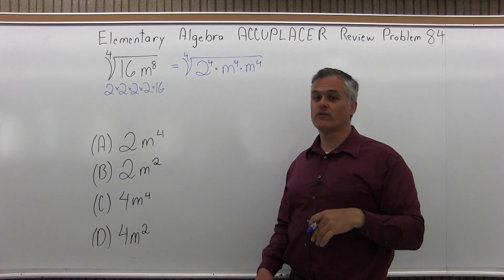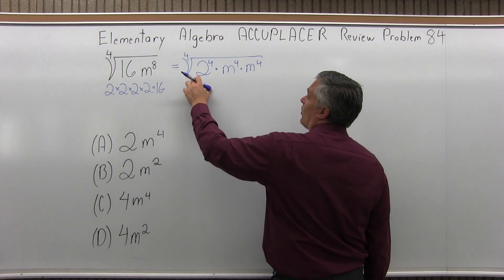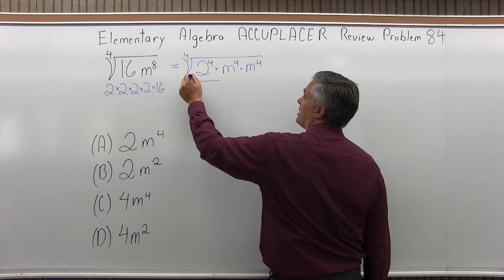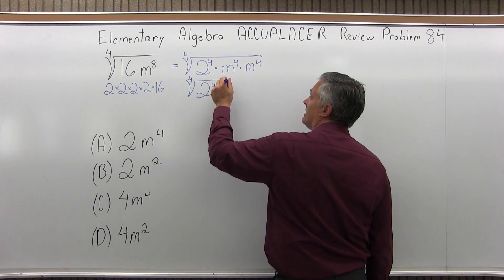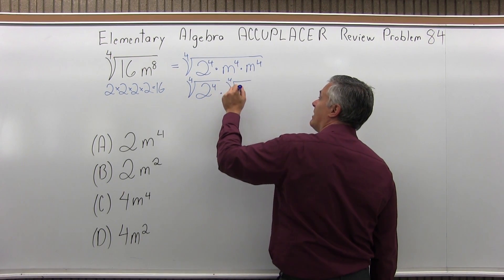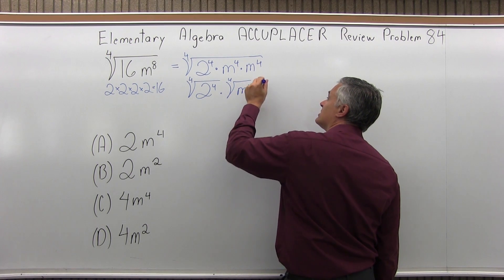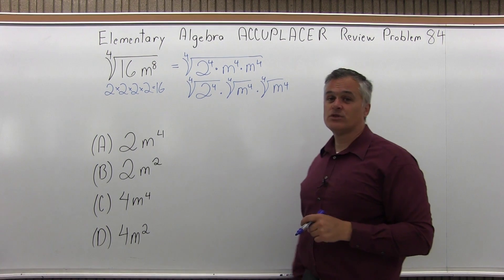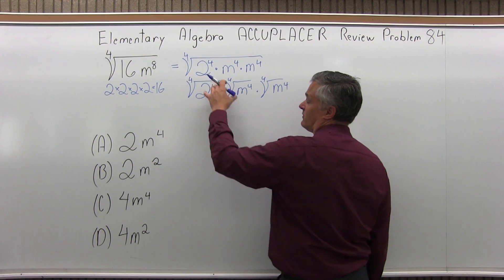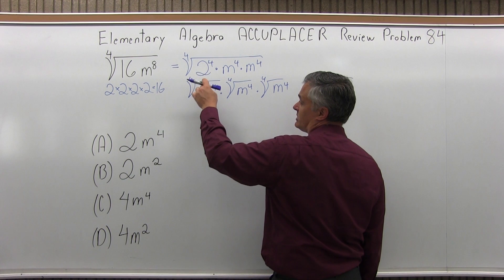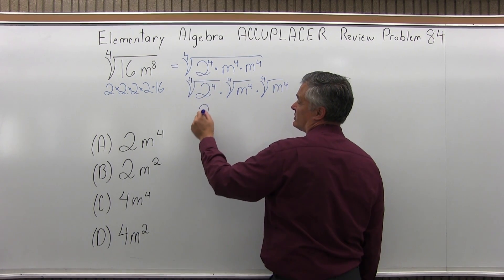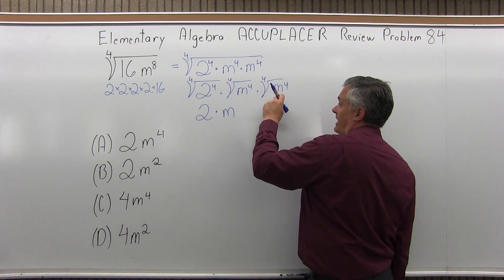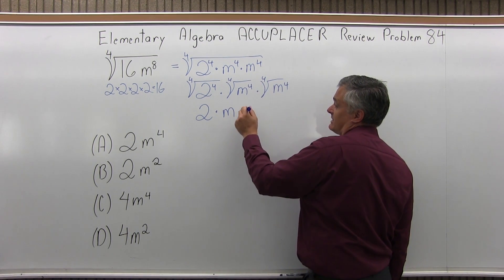If it was a third power I'd be looking for third power exponents. Now I have one big root, so next I'm going to split it into a few smaller roots. I'm going to do the fourth root of 2 to the fourth, times the fourth root of m to the fourth, times the fourth root of m to the fourth again. Each one of those roots gets undone very nicely — the root and the fourth power undo each other. So the fourth root of 2 to the fourth is just 2, times m, times another m.